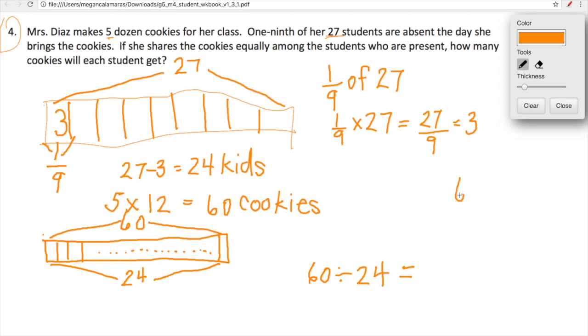60 divided by 24. We can just quickly take a look at that. Long division. How many 24s go into 60? 2 with some left over. 2 times 4 is 8. 2 times 2 is 4. 10 minus 8 is 2. 5 minus 4 is 1. So we have 2 and 12 twenty-fourths left over. We can simplify 12 twenty-fourths as equal to 1 half. So each of those lucky kiddos gets 2 and 1 half cookies.